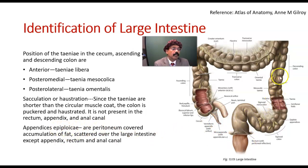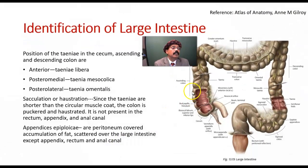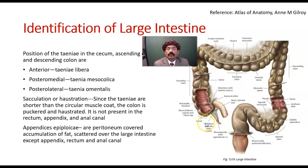Appendices epiploicae are mostly found around the sigmoid colon and the descending colon. Here the sigmoid colon is here, descending colon is here — you get a lot of appendices epiploicae. They are also present in other parts like the transverse colon, but are not present in the appendix, rectum and anal canal.